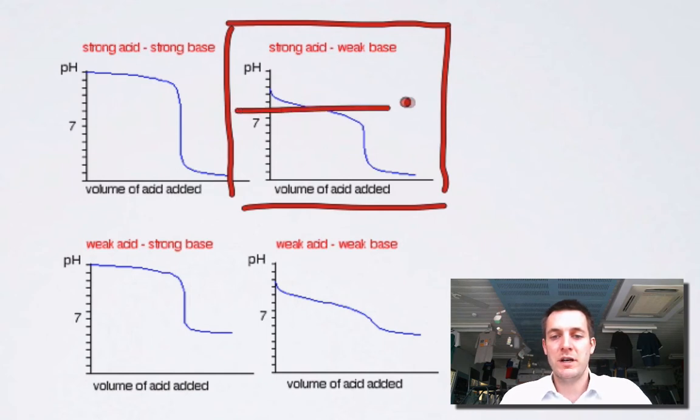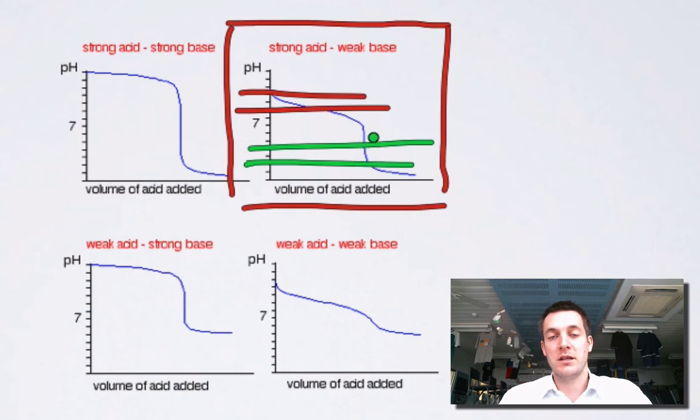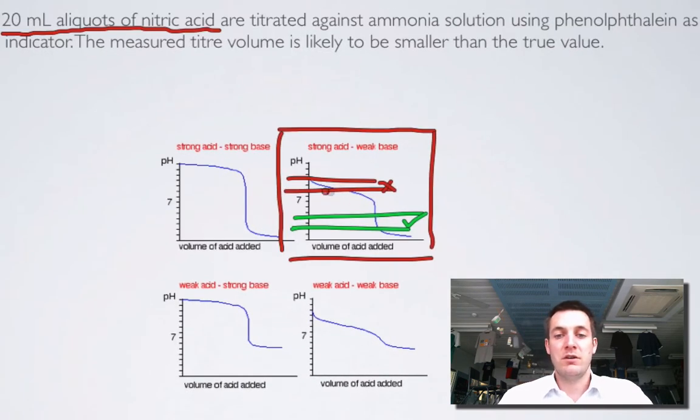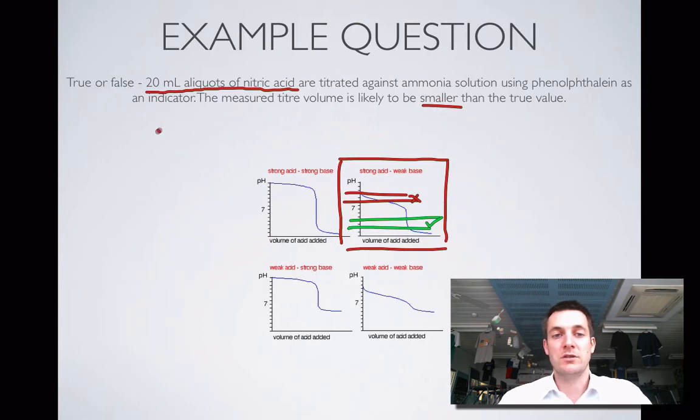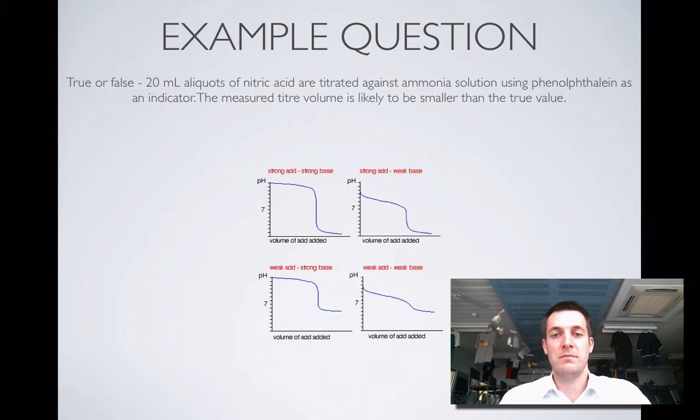Using phenolphthalein as an indicator. Remember, phenolphthalein changes in the range of 8 to 10. What we should have used here would have been an indicator that changed in the acidic range because equivalence is taking place at an acidic pH. So we want an endpoint that matches equivalence. Methyl orange would have been good. Phenolphthalein is not good. The measured titer volume: I've got to add more ammonia before I get to the color change. In other words, if I use phenolphthalein, I'm going to get a larger titer than if I'd used methyl orange. It's going to be artificially large, not smaller than the true value. So this one's false.